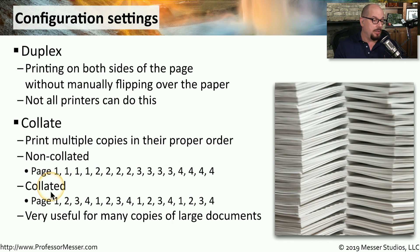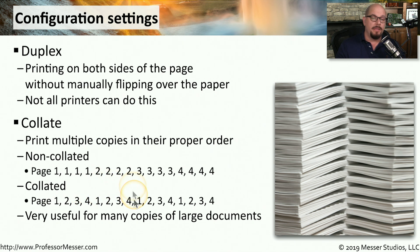With four copies of a four-page document printed collated, it will print pages one through four, then start over and print pages one through four again for each copy. This collated printing makes it easier to separate out these copies once the printouts are done — there's no extra work other than separating those four pages apart and handing them out to the users.